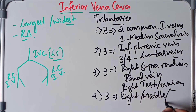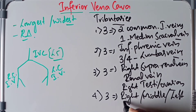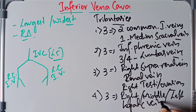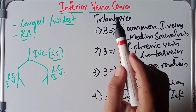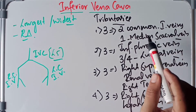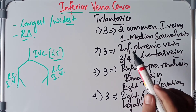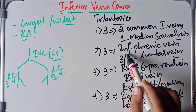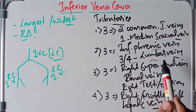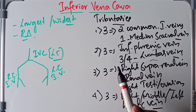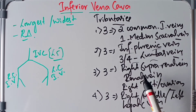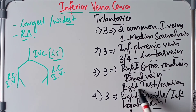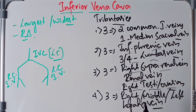Quickly revising: the three formative veins are the two common iliac veins and the one median sacral vein. The three abdominal wall tributaries are the inferior phrenic vein and the third and fourth lumbar veins. The three lateral visceral tributaries are the right suprarenal vein, renal vein, and right testicular or ovarian vein.